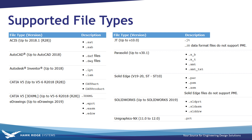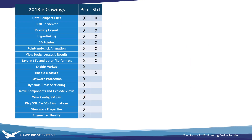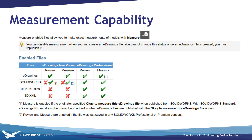It used to be that if you wanted to take measurements off these files, or do any type of advanced interrogation like section views and markups, that would require eDrawings Professional, which can either be purchased or is included with SOLIDWORKS Professional or higher licenses. This led to some complicated situations as SOLIDWORKS began pulling certain functionalities like measure into the base version, but only under certain circumstances — resulting in confusing scenarios of when you were allowed to measure and when you weren't.